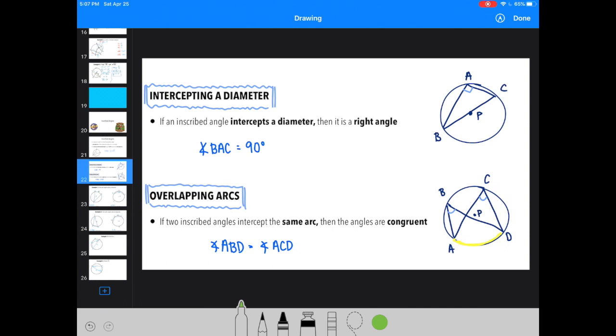There's another relationship we can note that's unique about inscribed angles. When we have an inscribed angle that intercepts a diameter, the inscribed angle is 90 degrees. So in this example, angle BAC is going to be equal to 90 degrees because it intercepts the diameter. If you look at the two chords that extend from this angle, it meets at the edges or at the endpoints of my diameter. Therefore, my angle is 90 degrees.